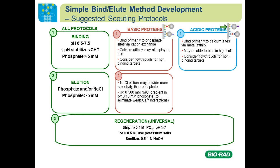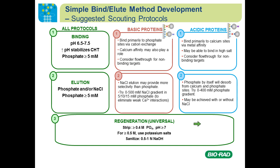Acidic proteins bind primarily via the calcium sites. Because this interaction is not affected by high salt, you may be able to do binding in high salt — some customers bind in up to 1 M sodium chloride in low concentrations of phosphate. If your protein doesn't bind, consider a flow-through step. Elution this time is with phosphate, since this interaction is only affected by phosphate. Both mechanisms can be desorbed with phosphate. You can start with a gradient and convert to a step if desired. We have sample scouting protocols in our instruction manual, available on our website.